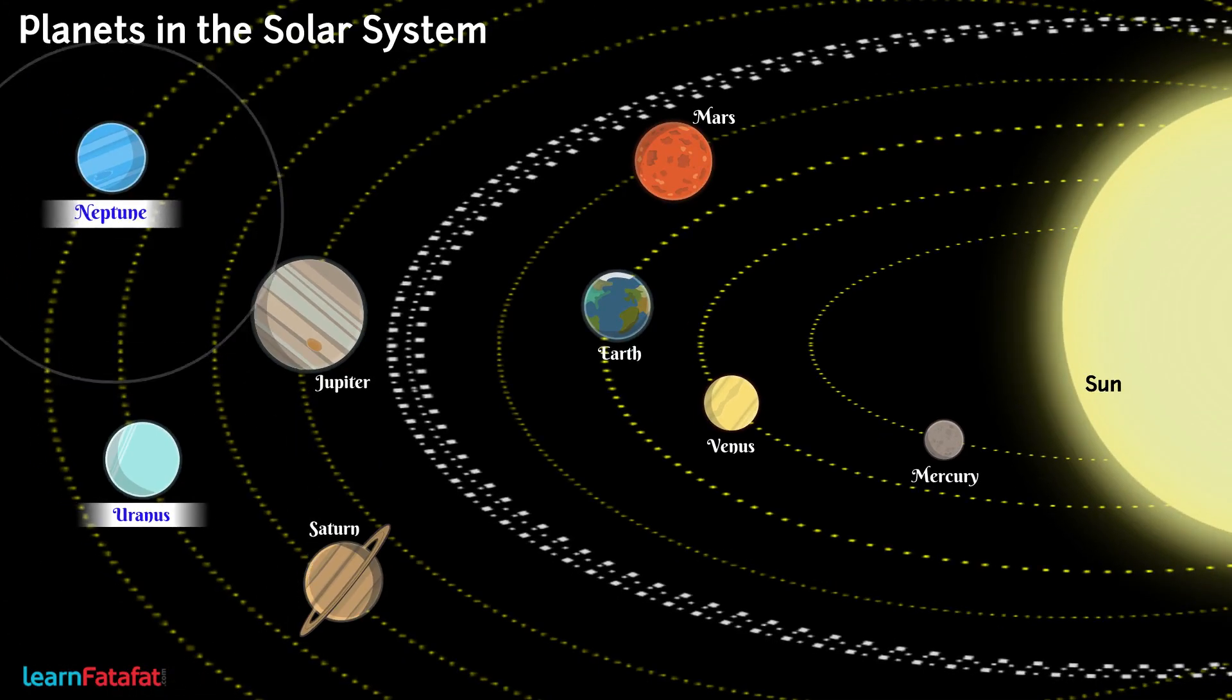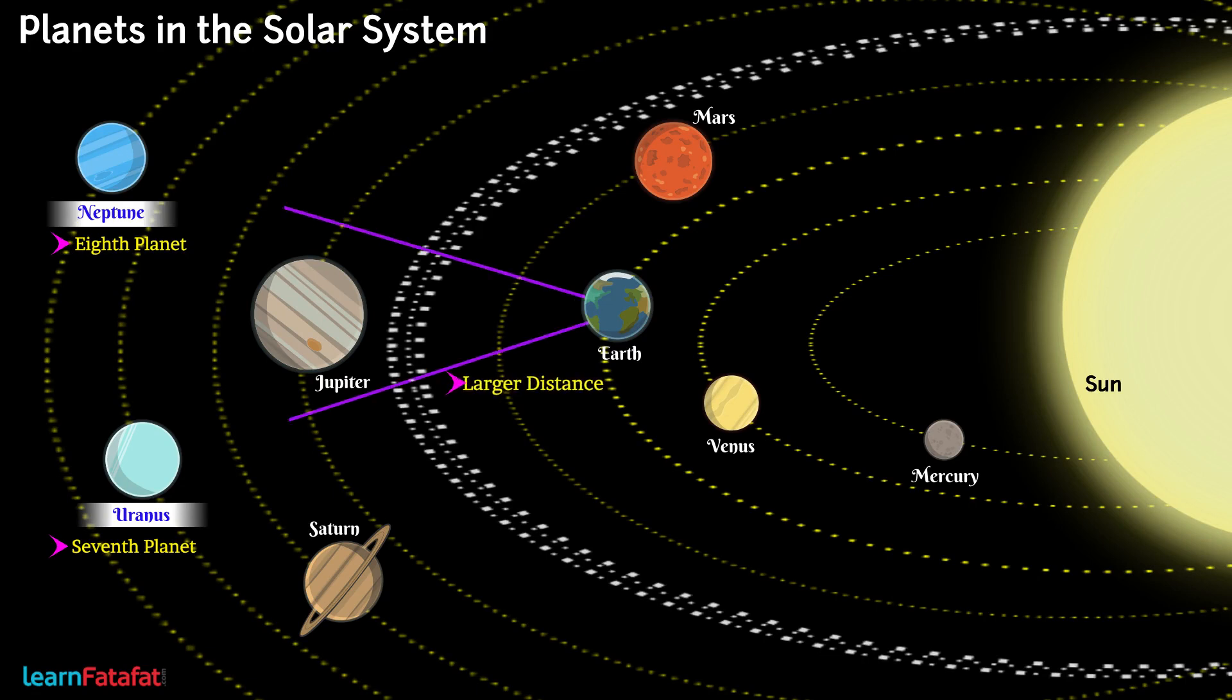Uranus and Neptune. These are the 7th and 8th planets from the Sun. Because of their larger distance from Earth, these can only be viewed with the help of large telescopes.